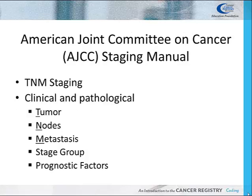The American Joint Committee on Cancer staging manual allows for concise staging of the tumor identified by a T for tumor, N for nodes, and M indicating if there is distant metastasis or not. Additional factors may play a role in the calculation of the AJCC prognostic stage group for a disease site. Each primary site has its own chapter and instructions within this manual; however, some primary sites such as brain tumors and leukemias are not staged using the AJCC staging manual.